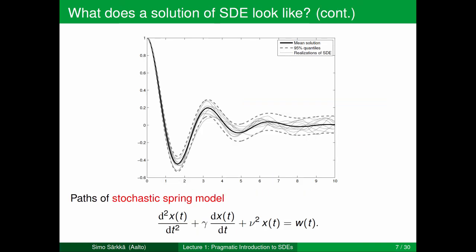This is another example of a stochastic differential equation model: a second-order SDE which models a spring with a stochastic force entering the system. When we draw a solution, we get one of those thin paths shown in the figure; drawing another gives another path, and so on. In mean, we get the solution shown in black. But in practice, each solution is a separate random draw that resembles the path of a spring but has a stochastic component. We can also compute 95% quantiles of the solutions theoretically, shown as dashed lines in the figure.